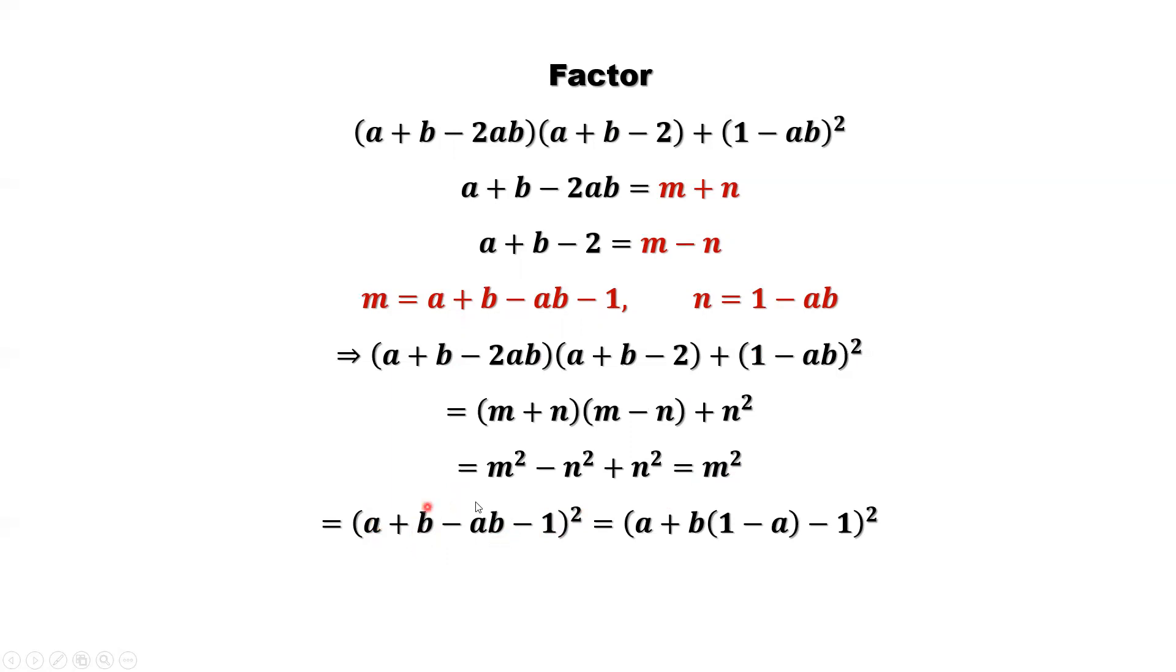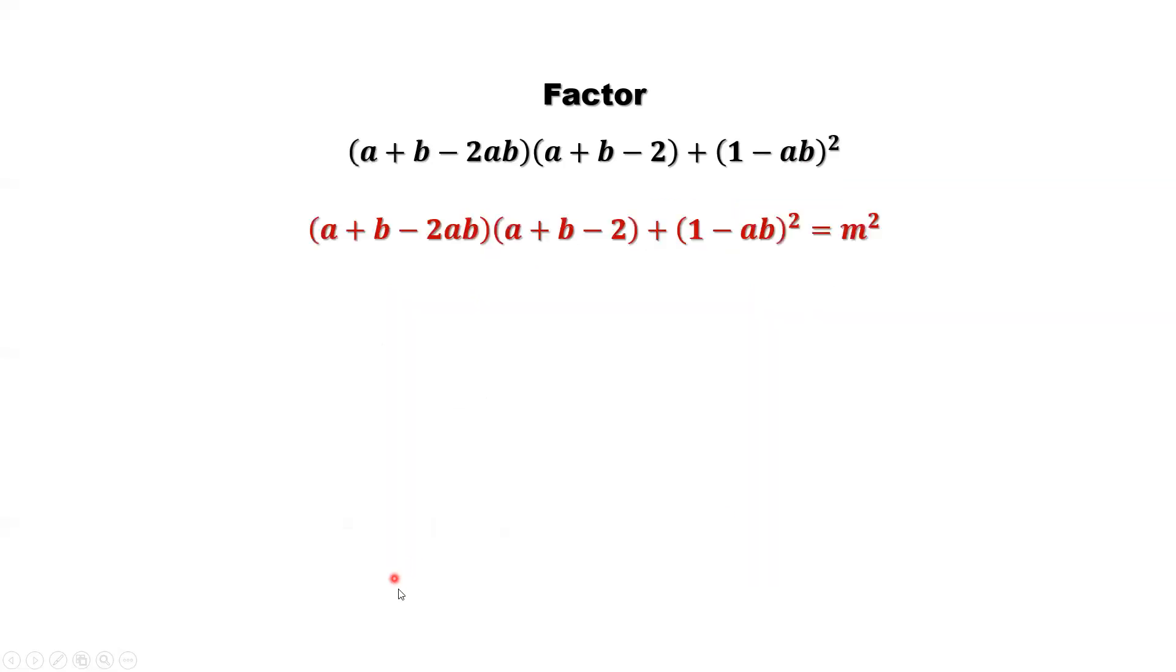Look at the two middle terms. They have a common factor b. We can factor b out. That's 1 minus a. Here is a 1. a minus 1 here. So we can group a minus 1. Put here and here.